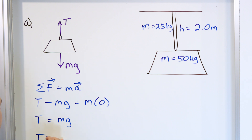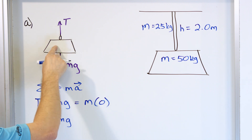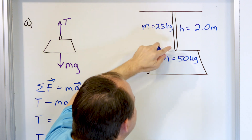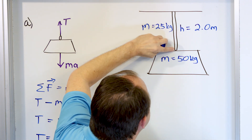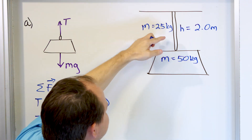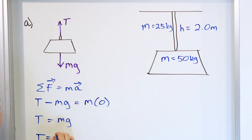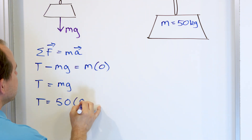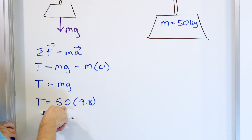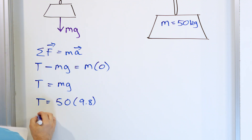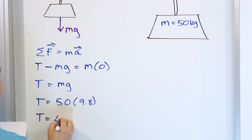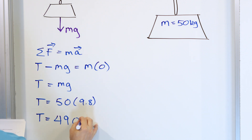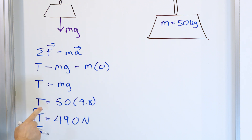The tension equals the mass of the chandelier times gravity. The chain has mass, but we're only considering way down at the bottom where the chain has effectively no mass. So we put 50 kilograms times 9.8 meters per second squared, and the tension in that part of the chain is 490 newtons — a positive number, meaning the tension is acting upward.